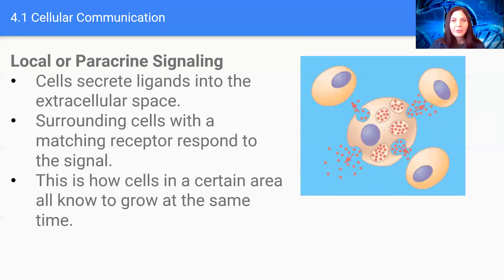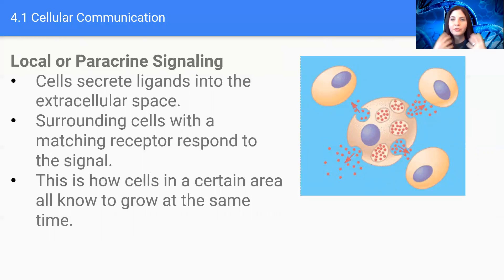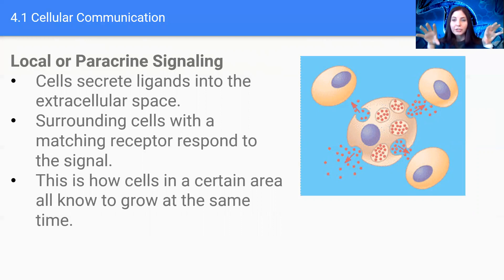Another type of cell communication is called paracrine signaling. Cells secrete ligands into the extracellular space, and surrounding cells that have a matching receptor will respond to the signal. This is how cells in certain areas all know to grow at the same time — like if I scraped my arm, all of my skin cells in that vicinity would know to start reproducing. Unfortunately, the same type of signaling can lead to tumor growth, where one cell's flawed signaling pathway causes unchecked growth signals, spreading to surrounding cells.